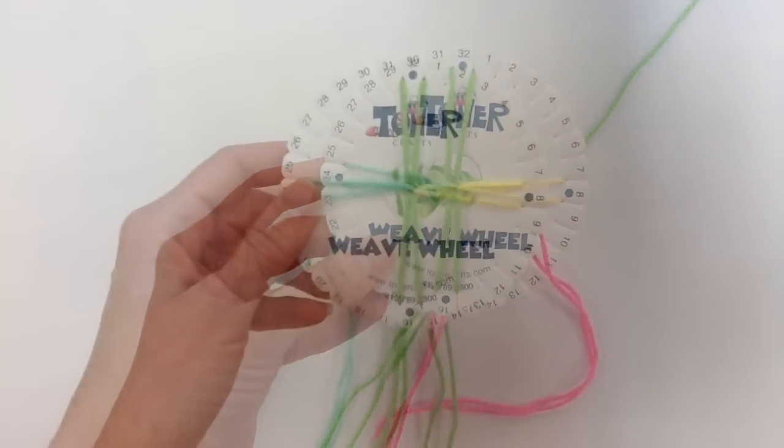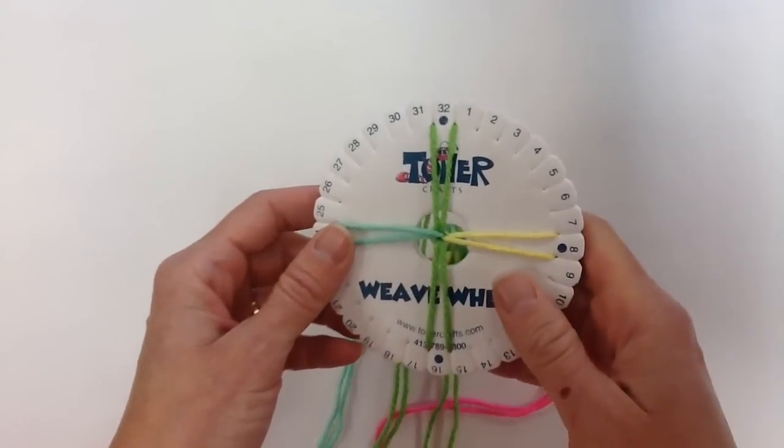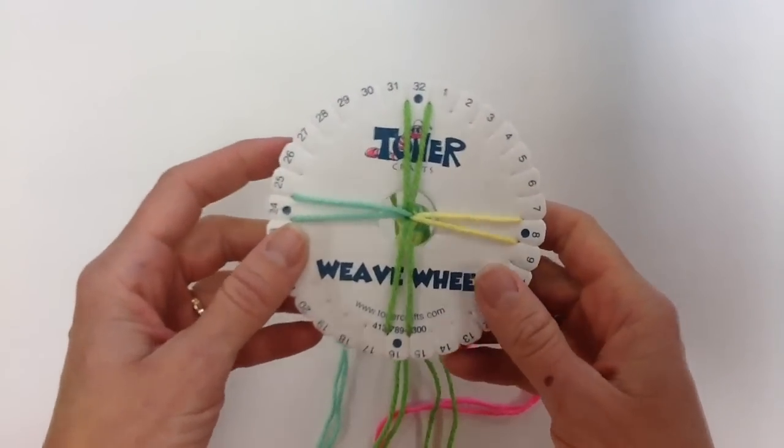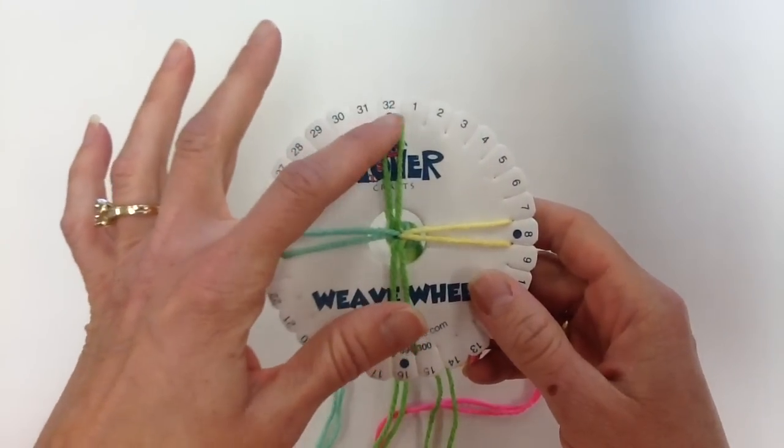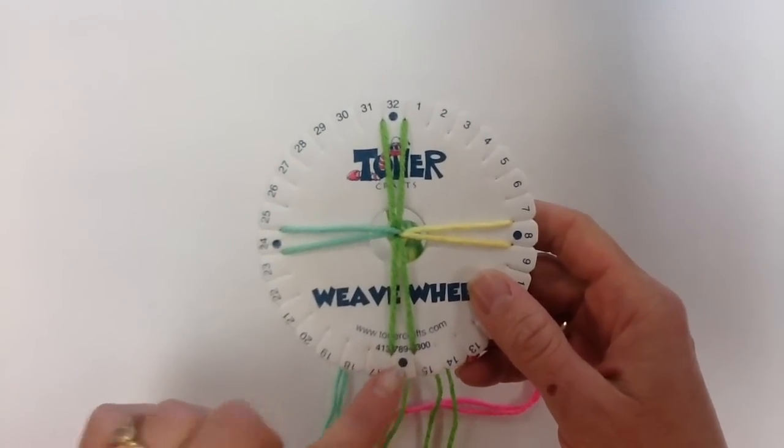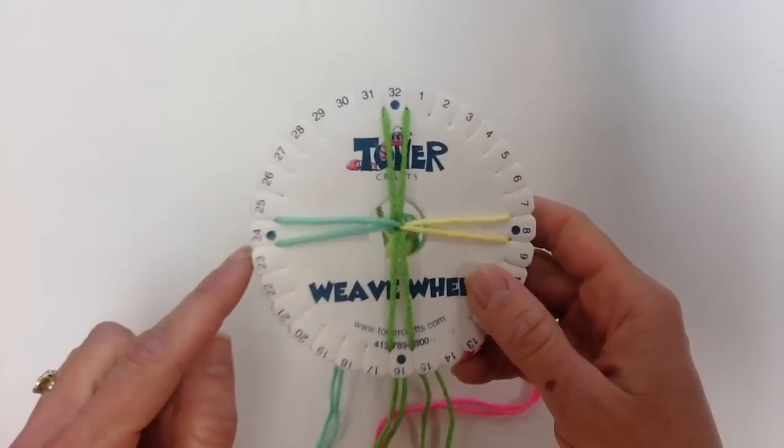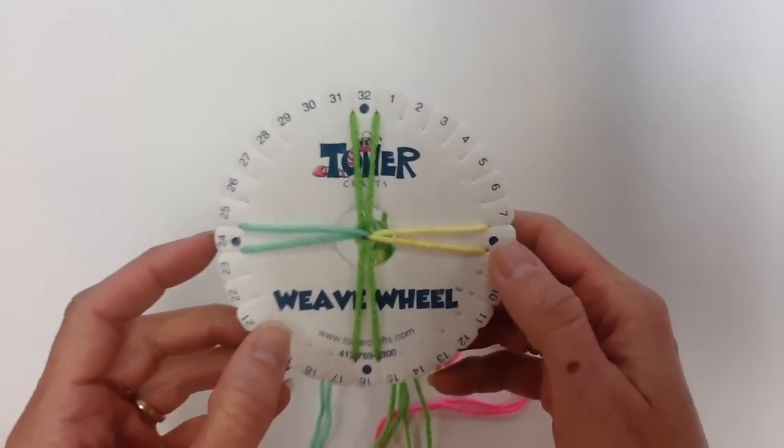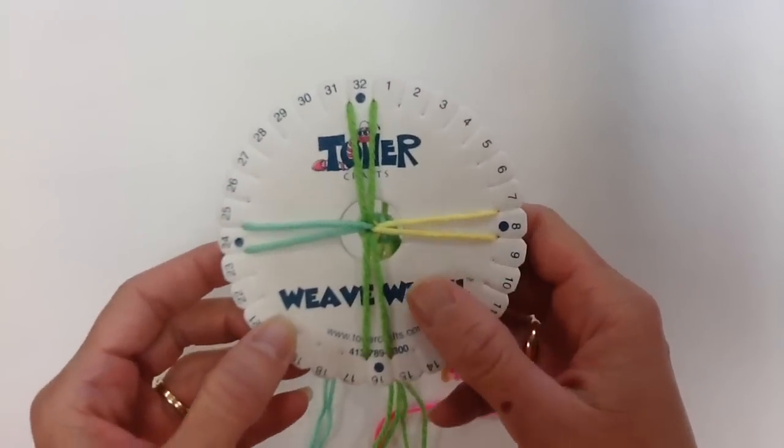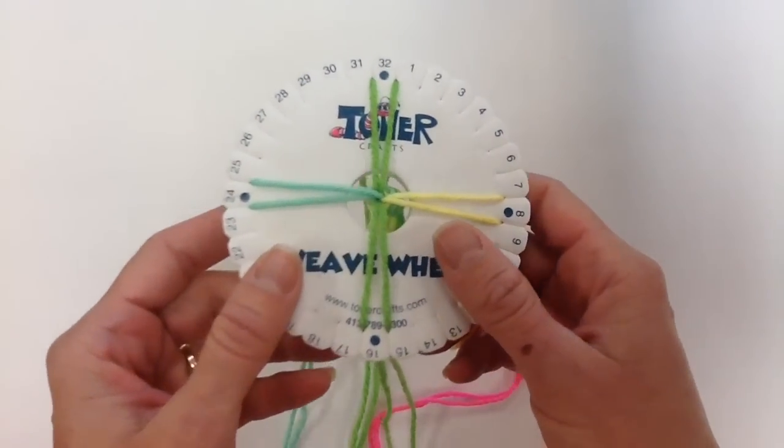Now I'm actually ready to start working with the weaving wheel. I'm going to start by having a position: 32 is on my top, 16 on the bottom, 24 is on my left, and 8 is on my right. We're always going to start with the bottom left.